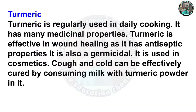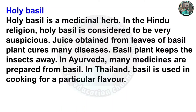Turmeric: Turmeric is regularly used in daily cooking and has many medicinal properties. Turmeric is effective in wound healing as it has antiseptic properties. It is also used in cosmetics. Cough and cold can be effectively cured by consuming milk with turmeric powder. Holy Basil: Holy basil is a medicinal herb. In the Hindu religion, holy basil is considered to be very auspicious. Juice obtained from the leaves of the basil plant cures many diseases. The basil plant keeps insects away. In Ayurveda, many medicines are prepared from basil. In Thailand, basil is used in cooking for a particular flavour.